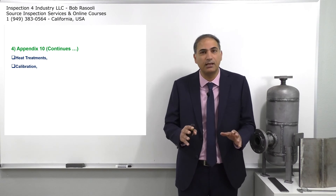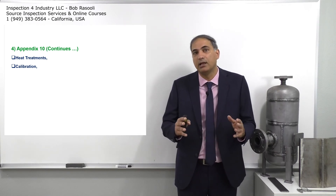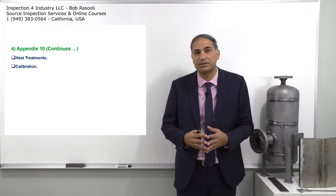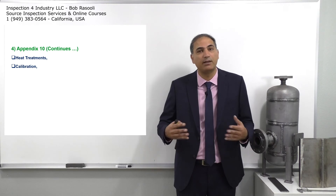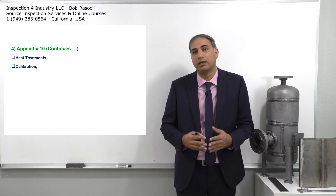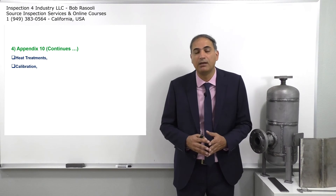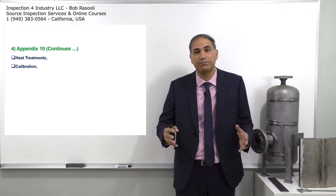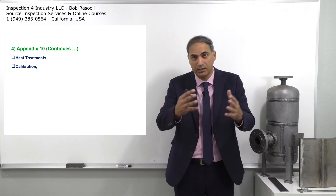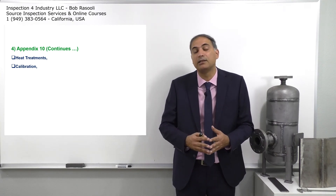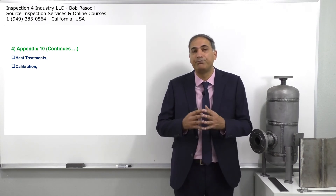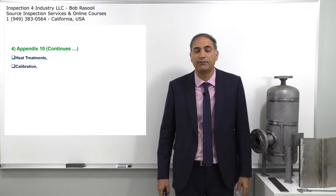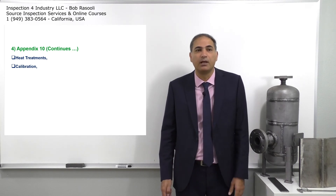There are not going to be any direct exam questions from Appendix 10, but what you need to know is that Appendix 10 is about describing a quality control system for any manufacturer to be able to become an authorized pressure vessel manufacturer. The other point that might be an exam question is that the quality manual needs to be submitted in advance and before any ASME audit on any pressure vessel manufacturing facility.